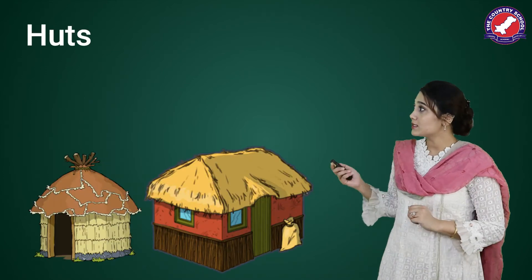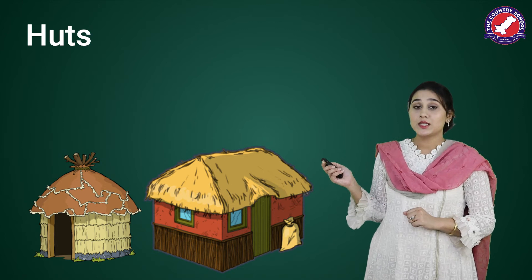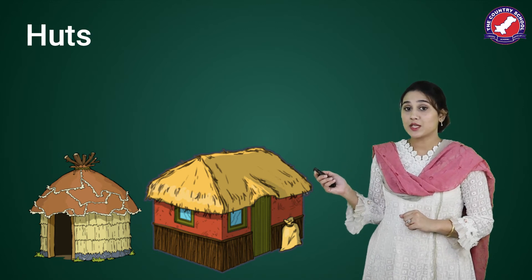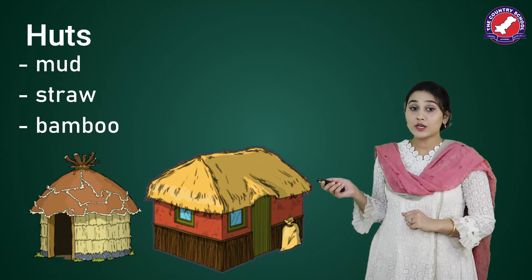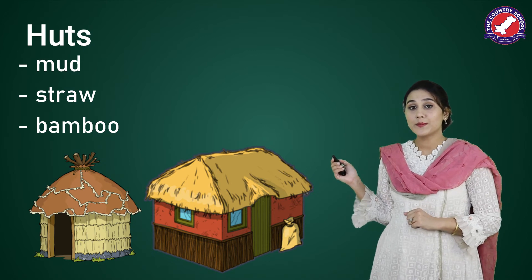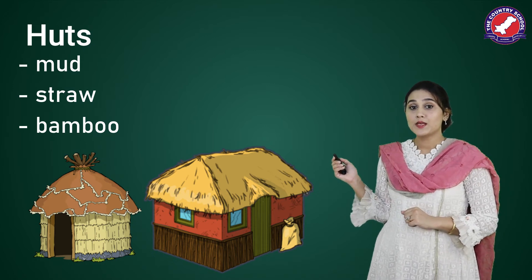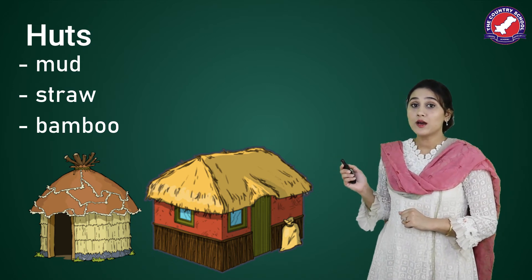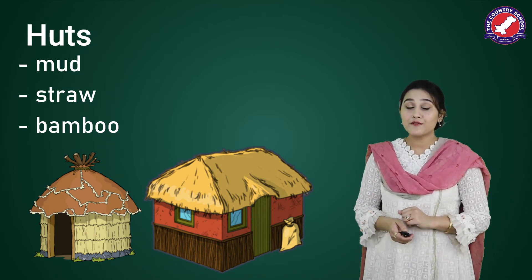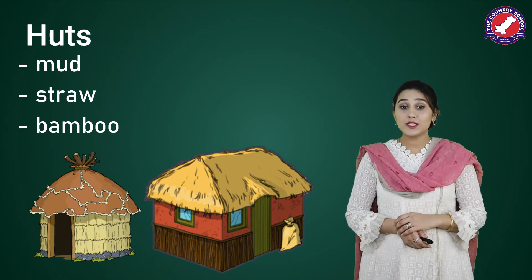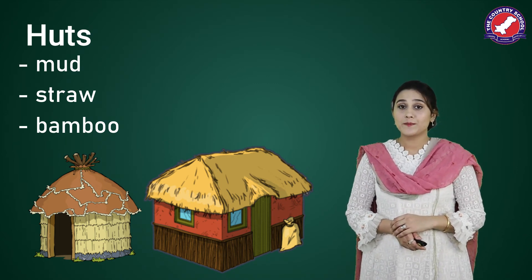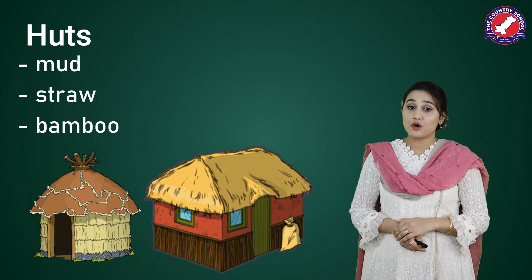There are more types of permanent houses which are not that strong, like this hut. These houses are made up of mud, straw, or bamboo. They're called huts, and they're mostly found in villages. They're not that strong, so they need to be repaired sometimes.